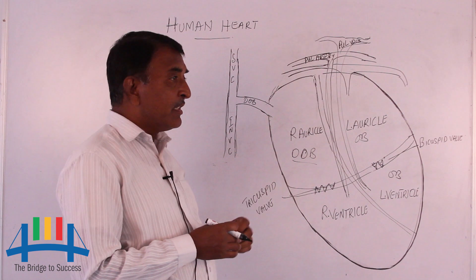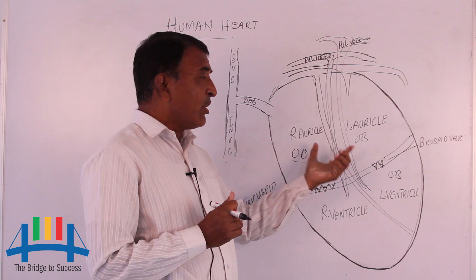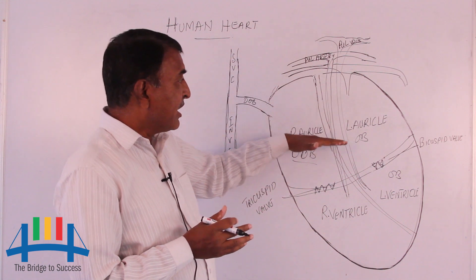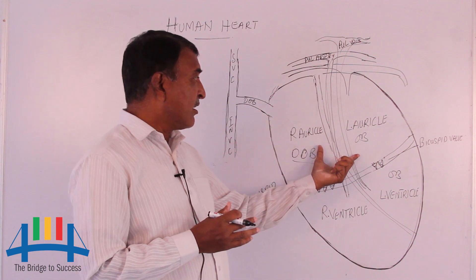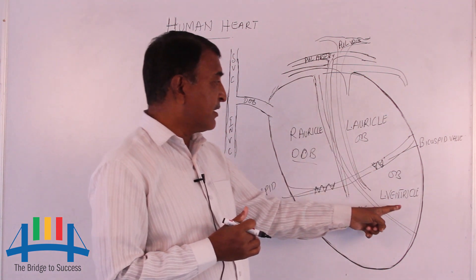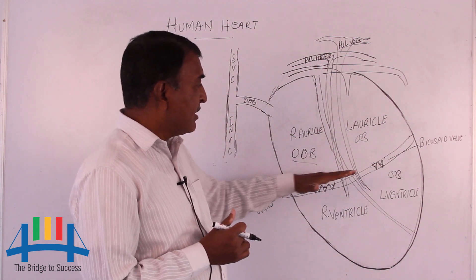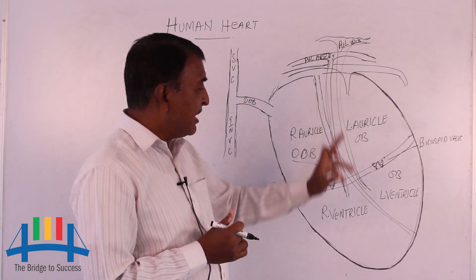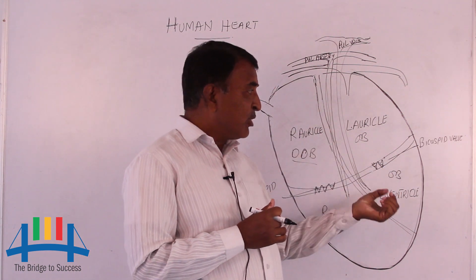There are three stages in the heartbeat. First, auricle contraction; second, ventricle contraction; third, both relax. When the auricles are contracting, deoxygenated blood enters into the right ventricle and oxygenated blood from the left auricle enters into the left ventricle. When the ventricles are contracting, the valves do not allow blood back into the auricles. The left ventricle supplies oxygenated blood to all parts of the body and the right ventricle supplies blood to the lungs. These are the three stages of the heartbeat.